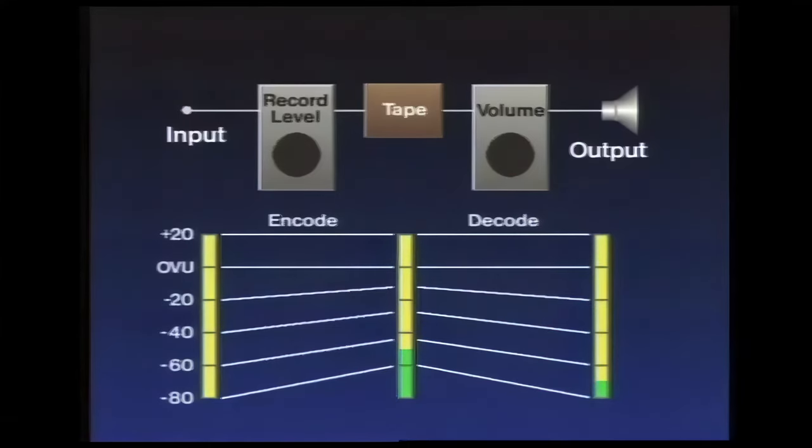A processor was needed to automatically vary the record level, so the quiet passages could be brought up above the noise, yet loud passages could be left at their original levels. And since we don't want to hear these signal changes when the tape is played back, the processor needs to operate once again, but exactly in reverse, to undo the changes it made before. The mirror image action returns the quiet passages to their original loudness, and simultaneously pushes the noise down. This two-step method of changing the signals when recording, and undoing the changes when playing, is called encode-decode processing.